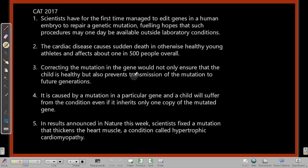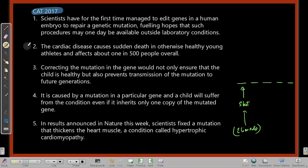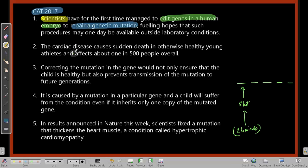Here is a question from CAT 2017 with five sentences to rearrange. Our first step is to get the start, and the best way is to eliminate what cannot be the start. Sentence one: 'Scientists have for the first time managed to edit genes in a human embryo to repair a genetic mutation, fueling hopes that such a procedure may one day be available outside laboratory conditions.' This introduces a topic clearly and seems like a good starting sentence — we'll keep it on hold.